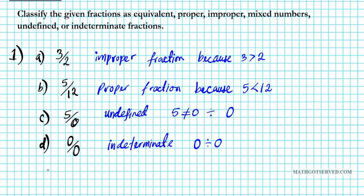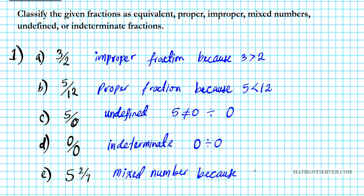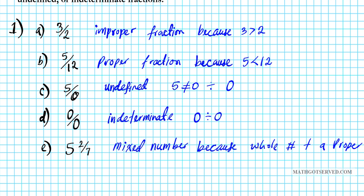Now let's take a look at another example. What if we have 5 and 2 over 7? This right here is a mixed number. Why is it a mixed number? It's a mixed number because you have a whole number plus a proper fraction. That is why 5 and 2 over 7 is a mixed number.